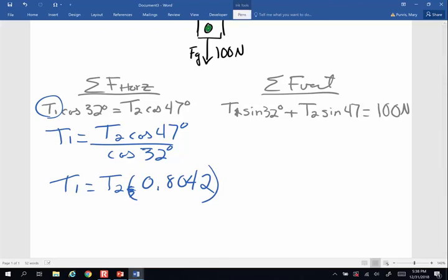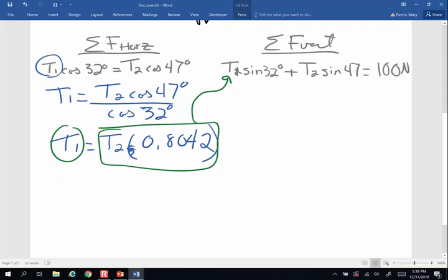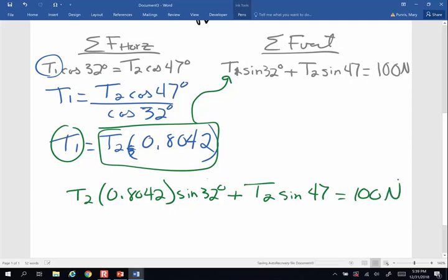So whenever there's a T1, wherever there is a T1, I am going to put this in the place of T1 right there. So let's draw that equation. So T1 is going to be T2 times 0.8042 times the sine of 32, plus T2 times the sine of 47 is going to equal 100 newtons. So let's simplify this. So the left hand side, 32 sine times 0.8042, I end up with T2 times 0.42616.